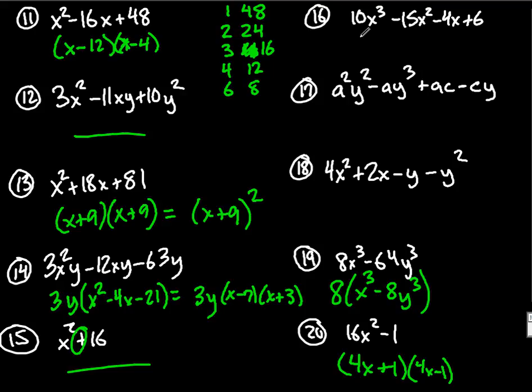Numbers 16, 17, and 18 are all going to be factored by grouping, where you're going to take the first set and the second set. I can factor out a 5x squared from the first part, leaving me with 2x minus 3.